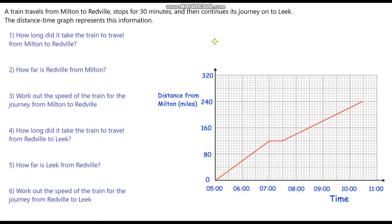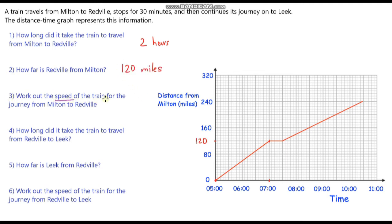A train travels from Milton to Redville, stops for 30 minutes, and then continues its journey on to Leek. The distance time graph represents this information. Pause the video and see if you can answer these six questions. Question one: how long did it take the train to travel from Milton to Redville? It starts at 5 o'clock and gets to Redville at 7 o'clock — that's a time of 2 hours. How far is Redville from Milton? It is exactly halfway between 80 and 160, which is 120 miles.